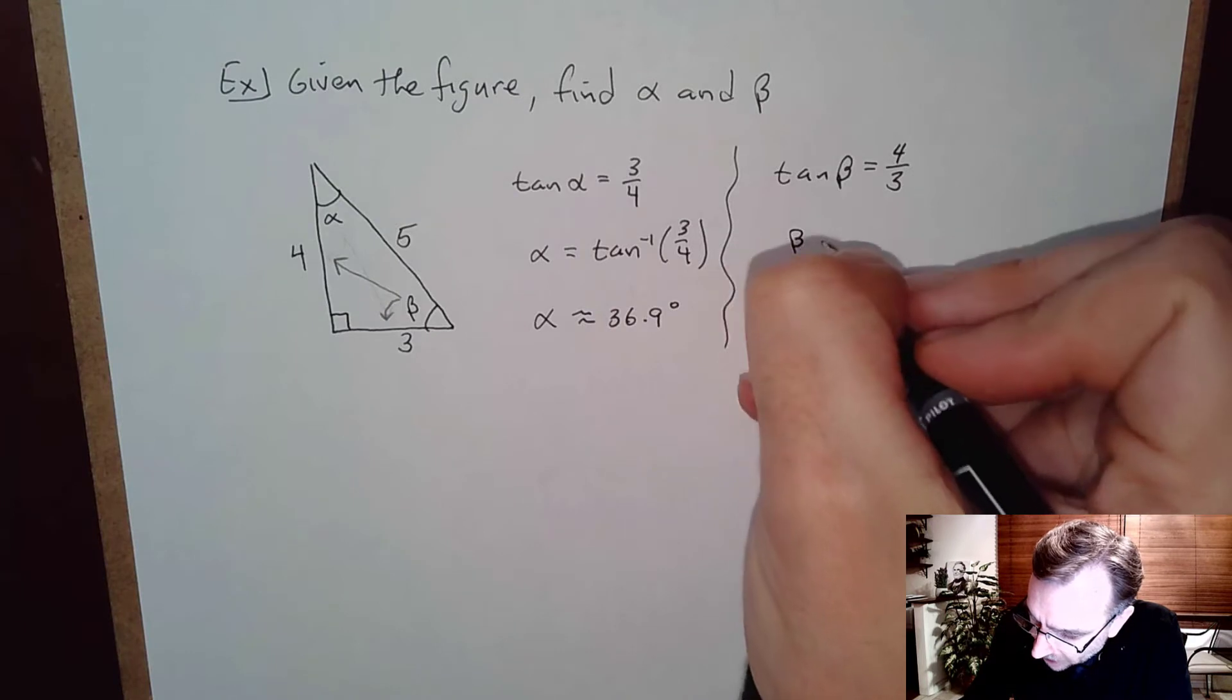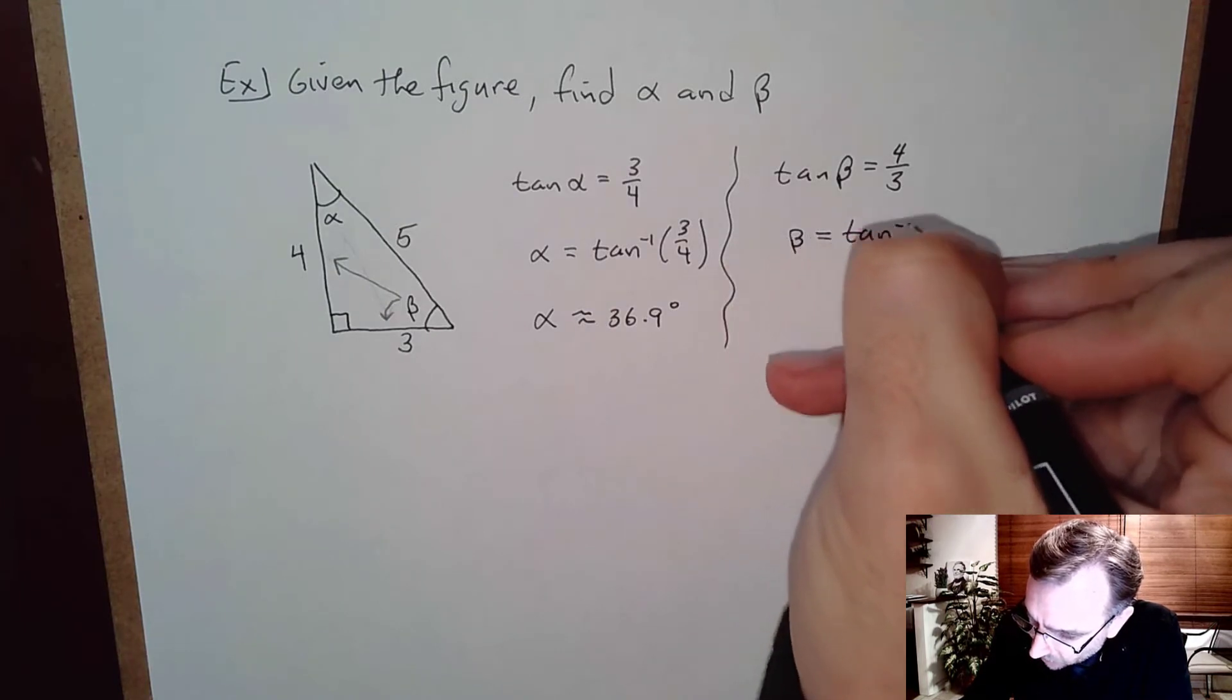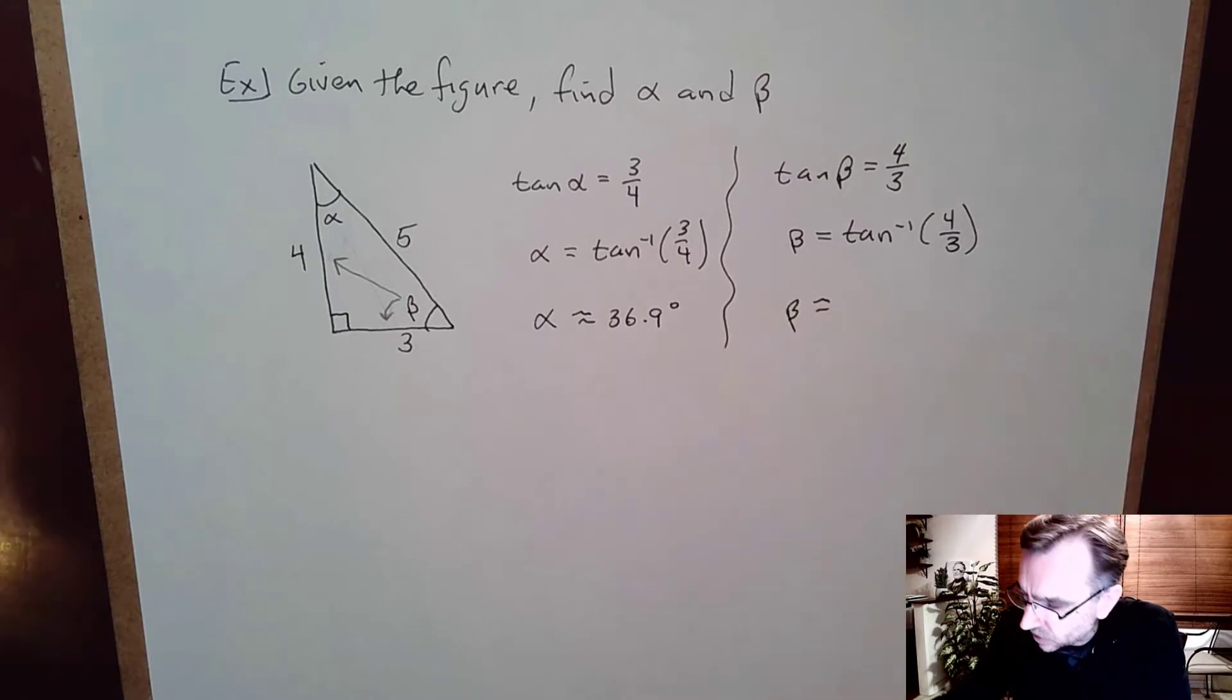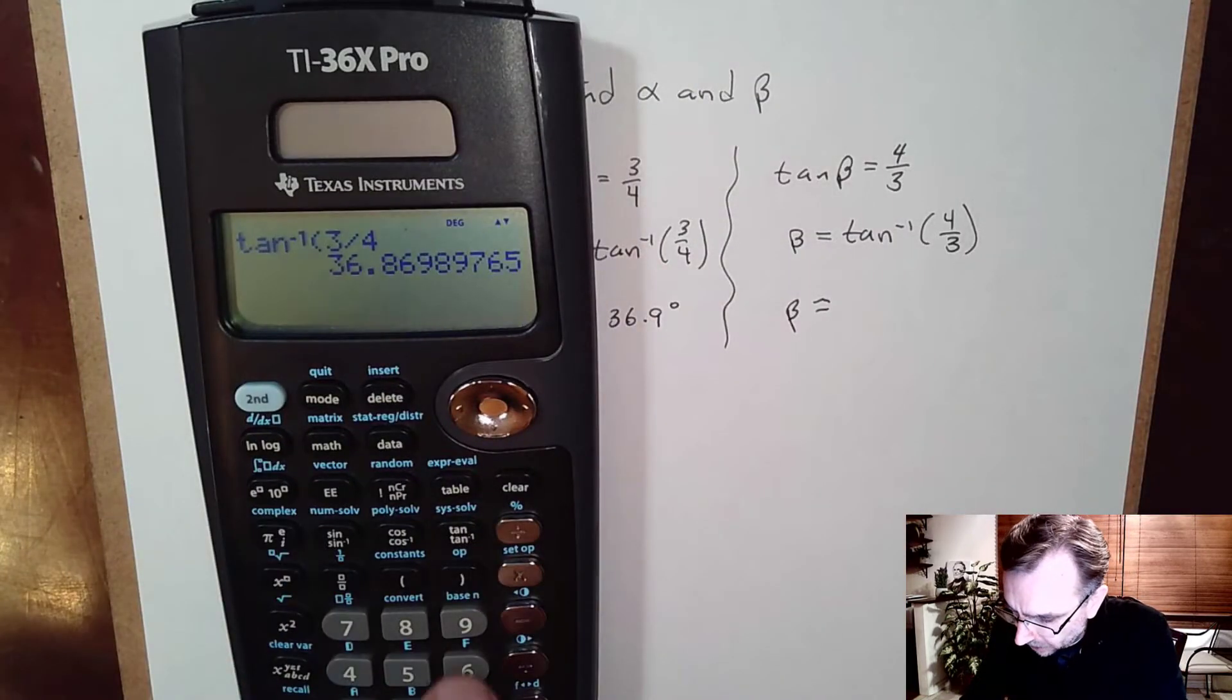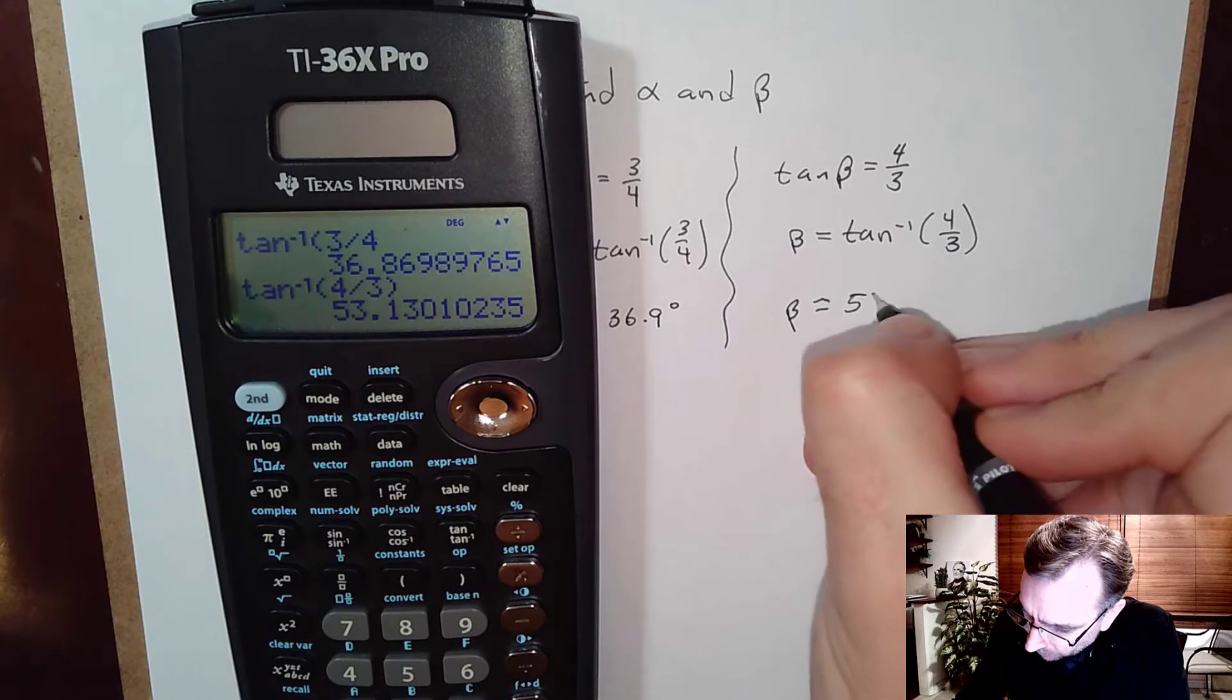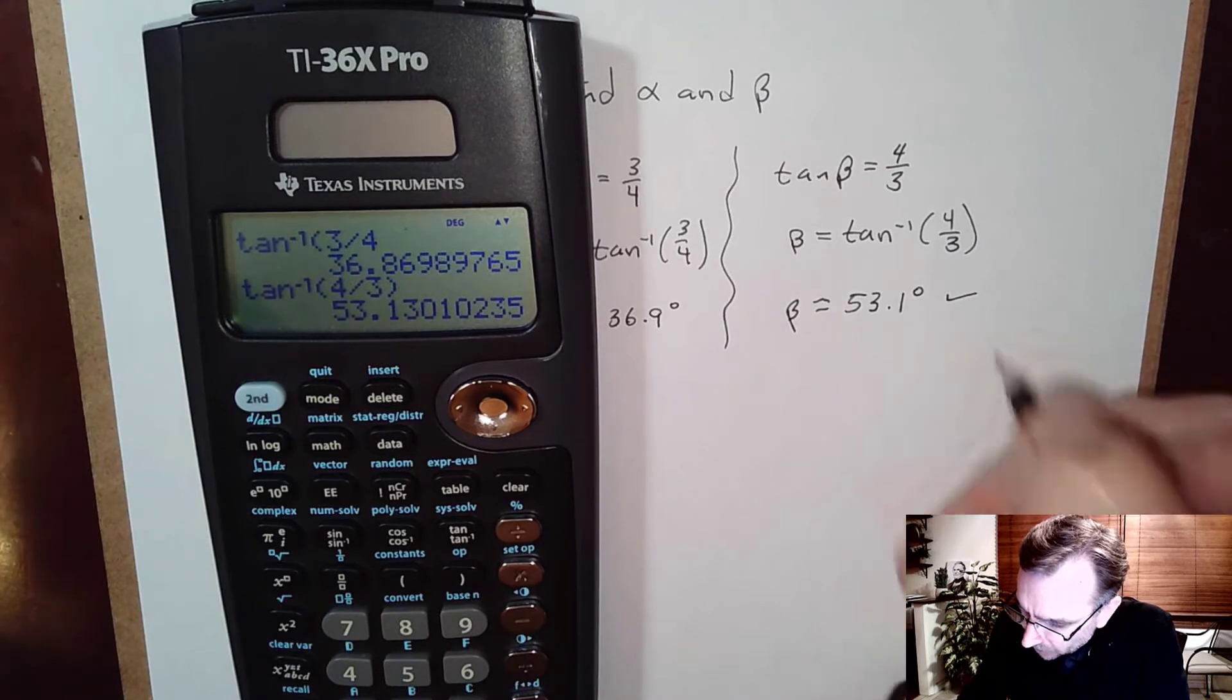And so beta equals tangent inverse of four-thirds, or beta is approximately equal to, using a calculator, tangent inverse of four-thirds. I get fifty three point one degrees.